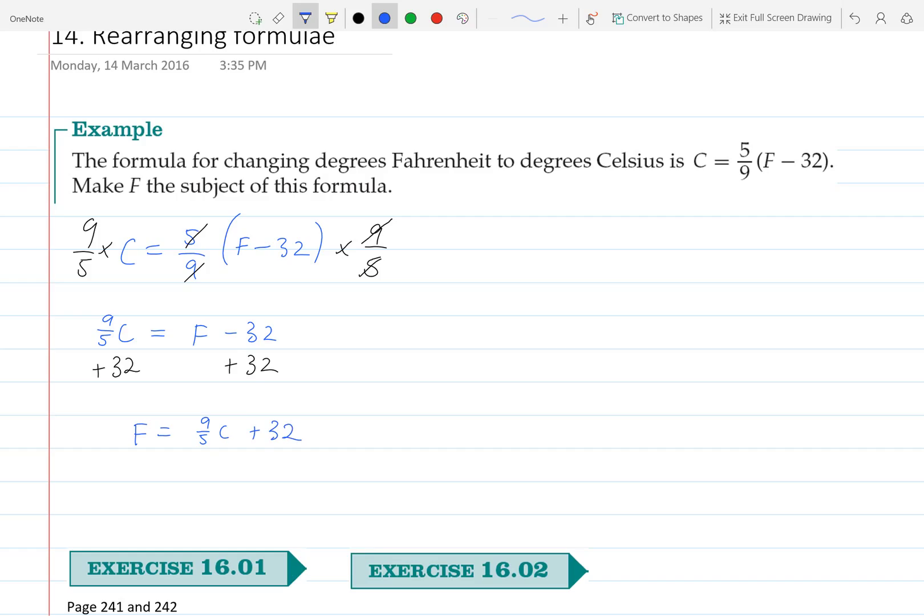So in other words, if it's 10 degrees at home right now, you could put 10 into there and work out what your temperature would be in Celsius.